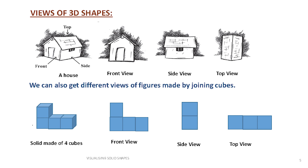Sometimes we arrange cubes to make some solid patterns, and we can draw the front view, the side view, and the top view for such solid figures. Here is one example: a solid made up of four cubes, and these are the front view, side view, and top view of this solid.